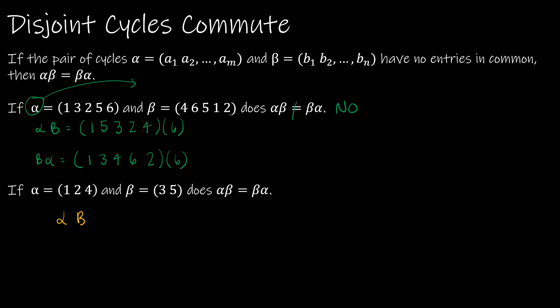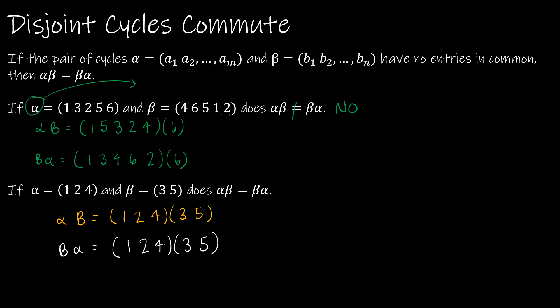This next example is fun. For alpha beta: one goes to two, two goes to four, four goes to one; and three goes to five, five goes to three. Now for beta alpha, since alpha acts first: one goes to two, two goes to four, four goes to one; three goes to five, five goes to three — the exact same result. Because they don't have any elements in common, they don't act upon one another, so disjoint cycles commute.